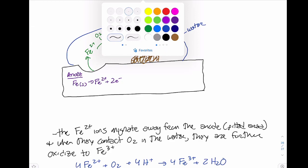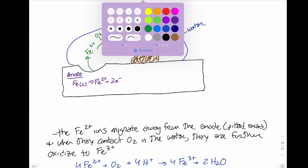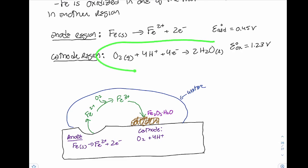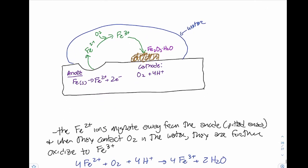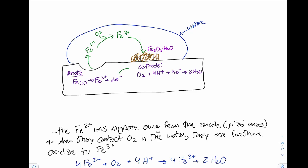Meanwhile, in a separate region, we have the cathode. At the cathode: O₂ + 4H⁺ + 4e⁻ → 2H₂O. The electrons flow from the anode region to the cathode region through the metal.